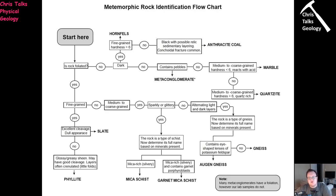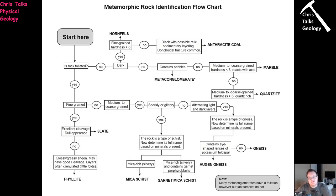What happens with augen is you have a large crystal — a porphyroblast, typically quartz or potassium feldspar — and as the rock gets sheared, it causes the crystal to develop two triangular zones either side in which new minerals precipitate. So you have your crystal in the middle with these two triangular zones, and it ends up looking like a football. These football-shaped crystal masses are referred to as augen.